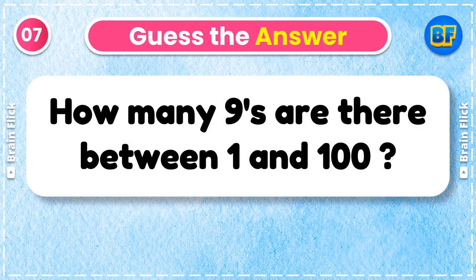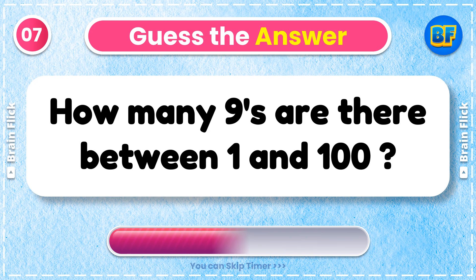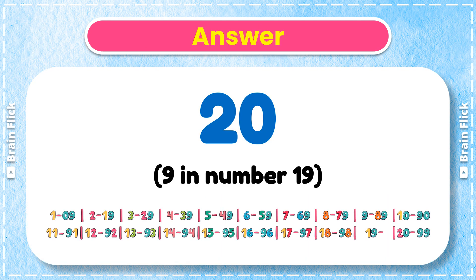Riddle 7. How many 9's are there between 1 and 100? Answer: 20. If we count, there is a 9 in the number 19 too.